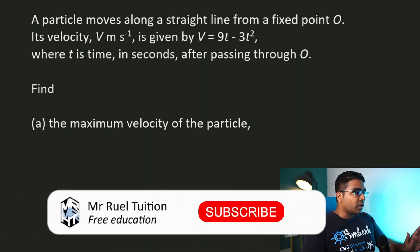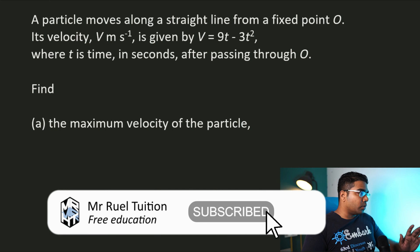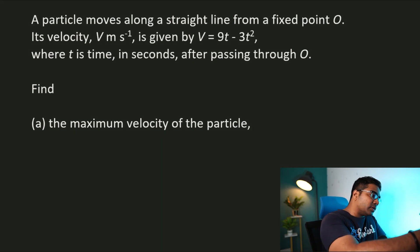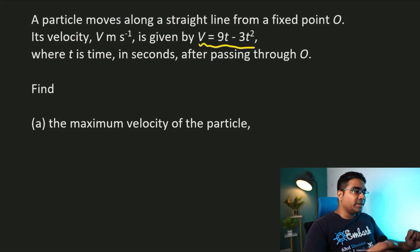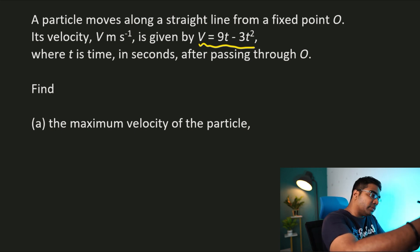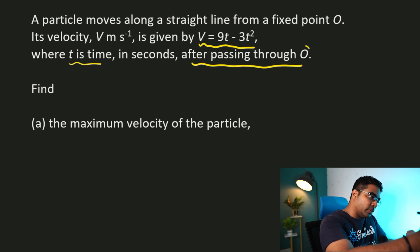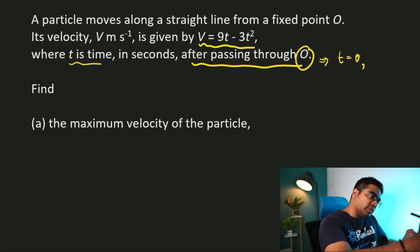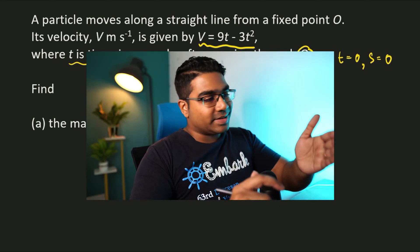A particle moves along a straight line from a fixed point O. Its velocity v is given by v = 90 minus 3t squared, where t is the time in seconds after passing through O. There's a very important point here: t is the time after passing through O, which means when t equals 0, the displacement of the object is 0 as well. So t = 0, s = 0.